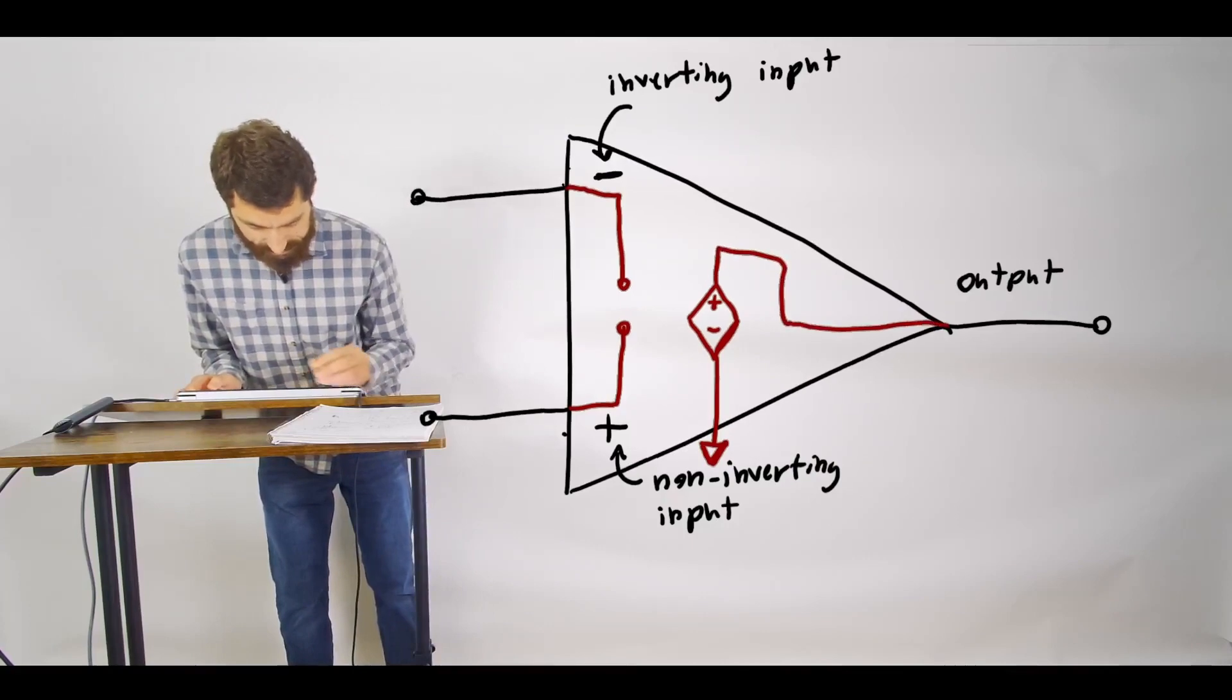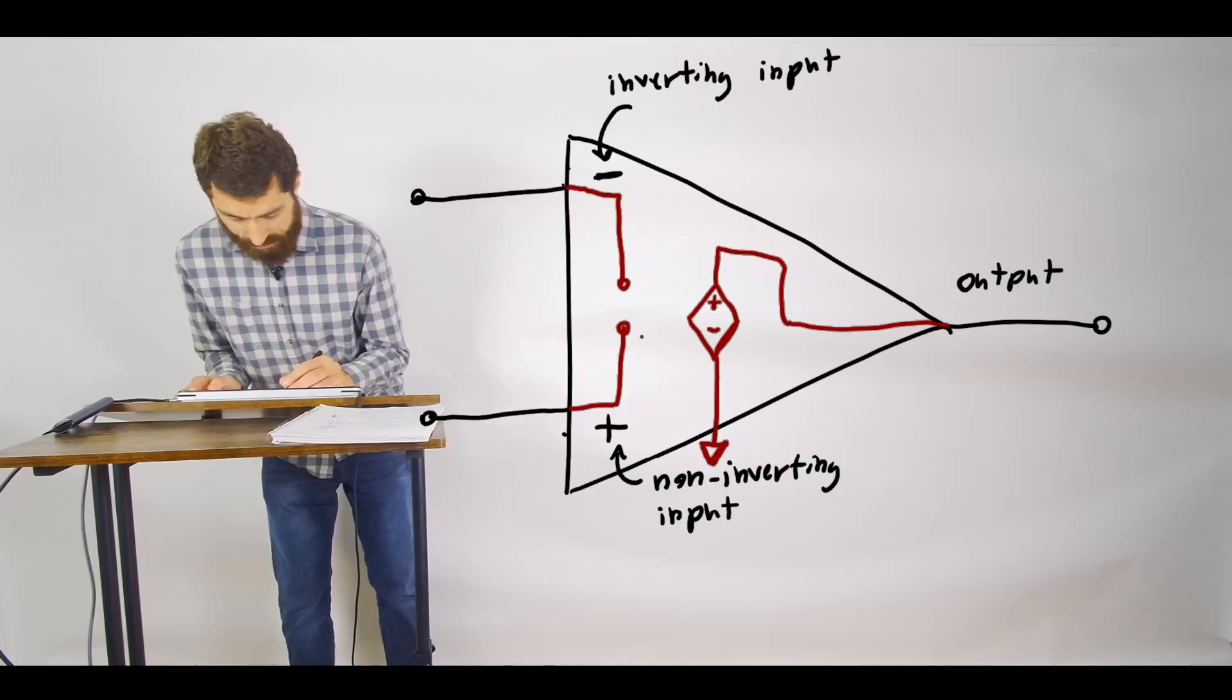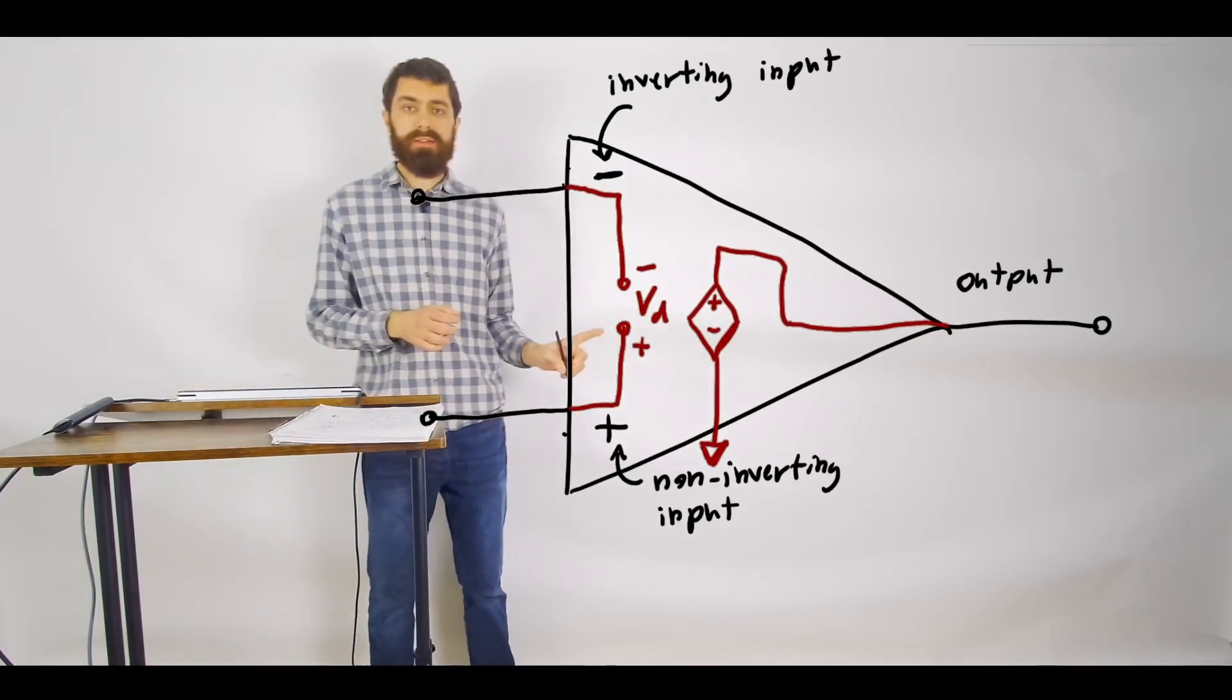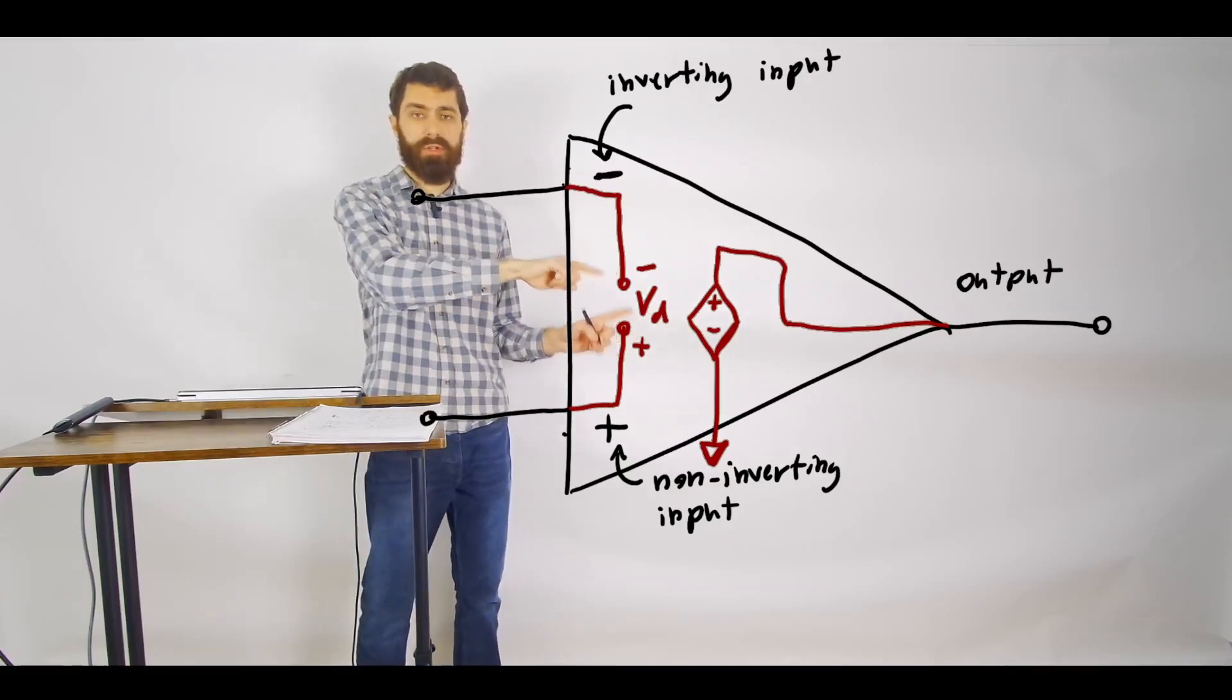And the voltage on this dependent voltage source is dependent on the voltage on your open circuit here. So this just connects to your output there. And it's dependent specifically on this voltage we're going to call VD.